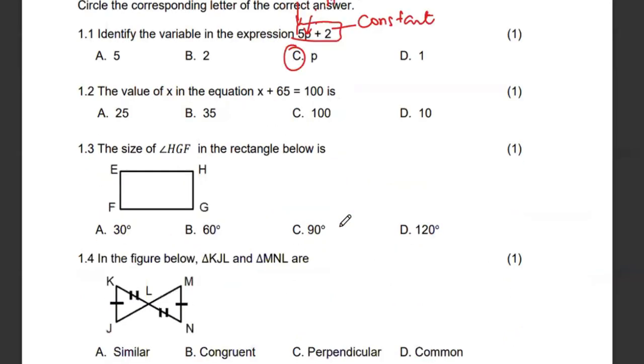Then 1.2, the value of x in the equation. We need to solve this equation. Let's move the 65 that side. Since we are adding, when the 65 crosses the equal signs, we shall be subtracting. So it's going to be x equals 100 minus 65 and this gives us 35 which is option b.